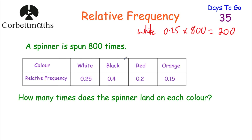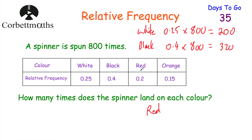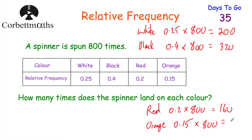For black: 0.4 × 800 = 320. For red: the relative frequency is 0.2, and 0.2 × 800 = 160, so it landed on red 160 times. For orange: the relative frequency is 0.15, and 0.15 × 800 = 120. We can check our answer: 200 + 320 = 520, plus 160 = 680, plus 120 = 800. They add up to 800, which is the number of times the experiment took place. Well done if you got that.